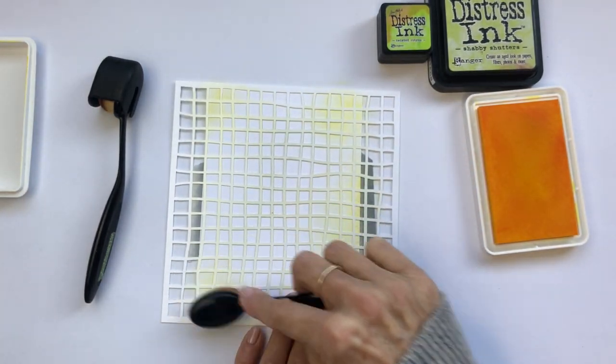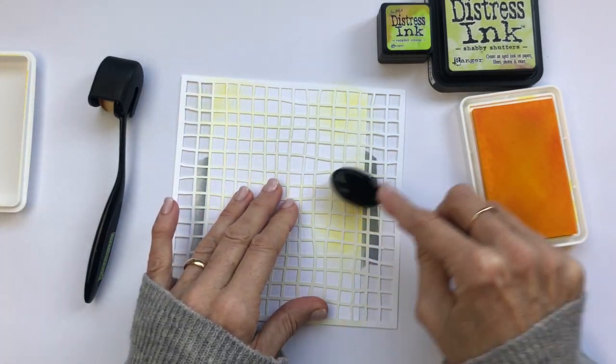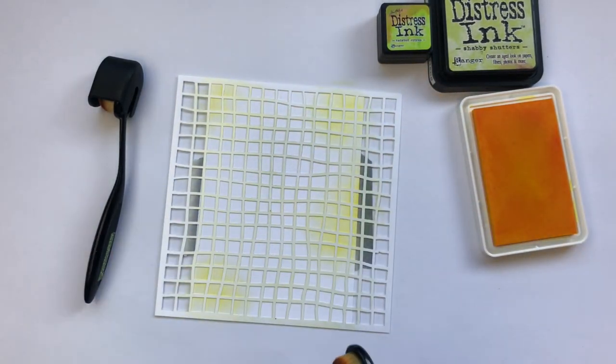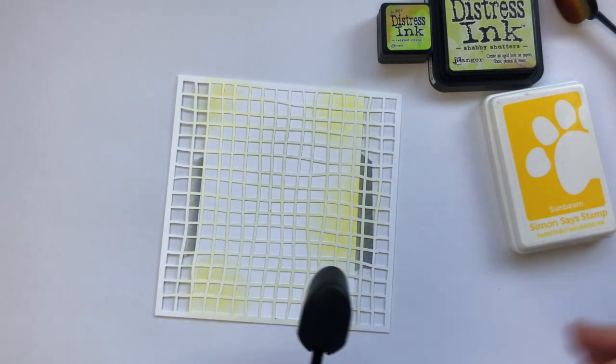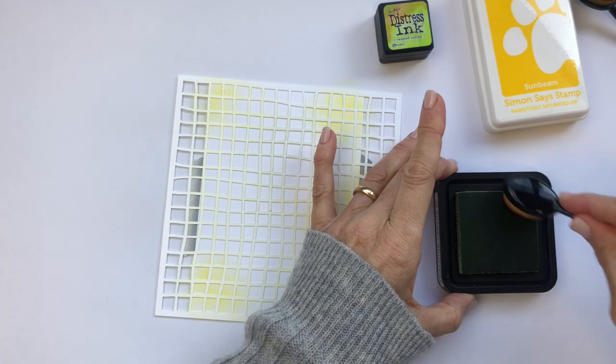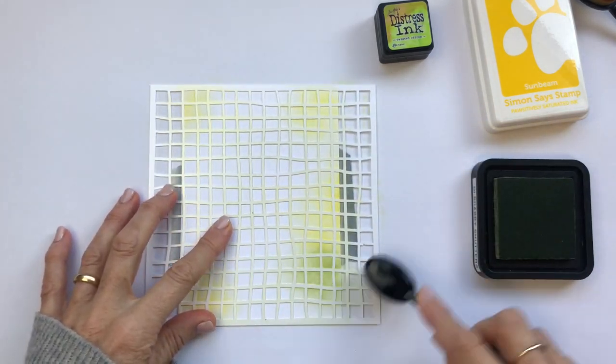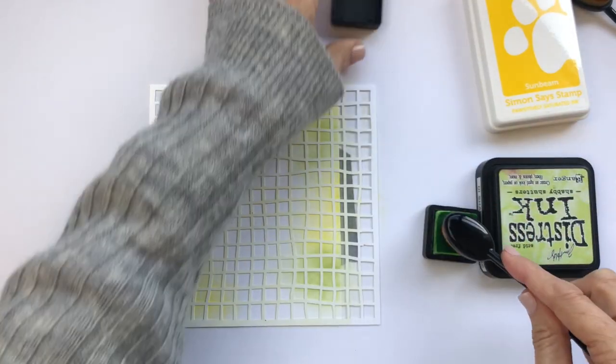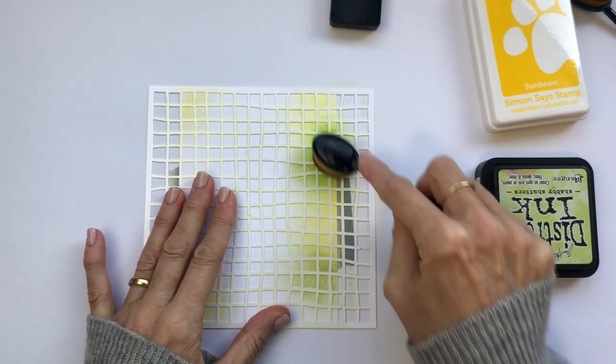For this card I'm doing the ink blending first and then stamping the image, but you'll see later that I've reversed the order for the other card. I'm just mixing the colors around choosing different areas to blend into and always just being aware of the place that I want to stamp the image.